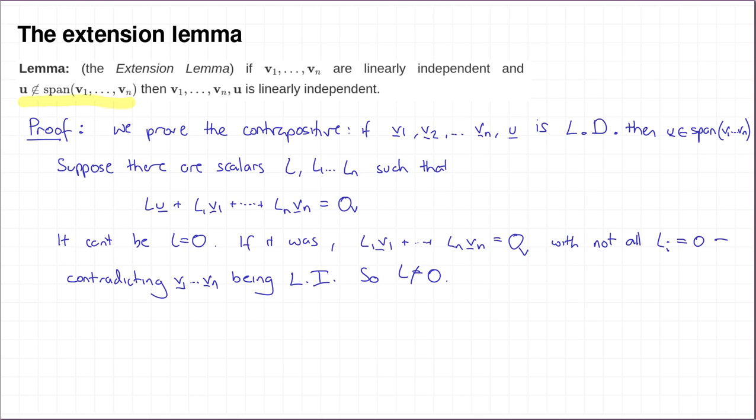So L must be non-zero. We're now just going to rearrange this equation to give us an expression for u. Since L is not zero, I can multiply everything by L to the minus one, and I can move all these vectors onto the other side. When I do that, I get u is equal to minus L to the minus one L1V1 minus L to the minus one L2V2 and so on. This thing here is visibly a linear combination of V1 up to Vn. So it's an element of the span of V1 up to Vn.